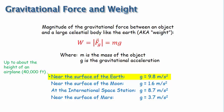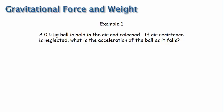Why is g called the gravitational acceleration? I'll explain it by working through an example. A 0.5 kilogram ball is held in the air and released. If air resistance is neglected, what is the acceleration of the ball as it falls? We can consider this question with Newton's second law. First, draw a force diagram. Since we've neglected air resistance, the only force acting on the ball is gravity.